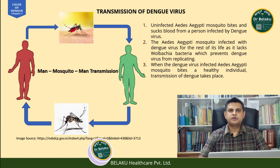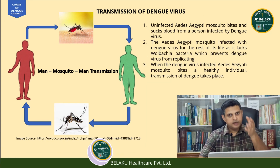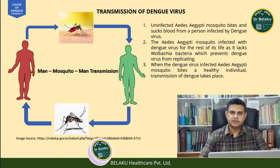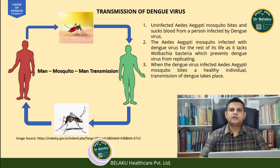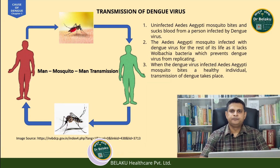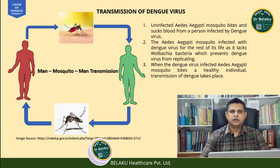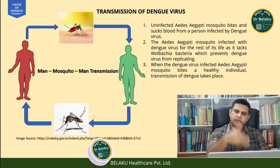Let's now learn about the transmission of dengue. Basically, an uninfected female Aedes aegypti mosquito bites an infected person and sucks blood from them. The virus starts developing inside the mosquito because Aedes aegypti lacks a bacteria called Wolbachia, which is a natural deterrent to the multiplication of the virus inside the mosquito's body. Since Aedes aegypti lacks this Wolbachia bacteria, the virus develops inside the mosquito, and when it bites another healthy individual, the virus gets transmitted. Another uninfected mosquito bites this infected person and then bites an uninfected person — that's how the cycle continues.